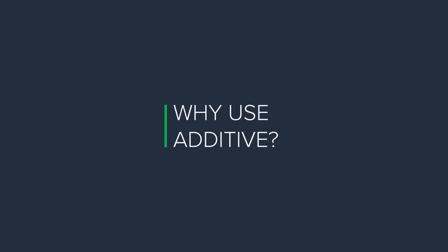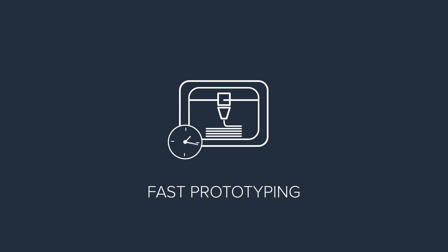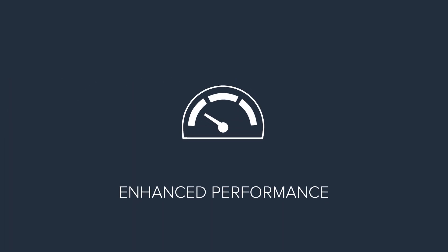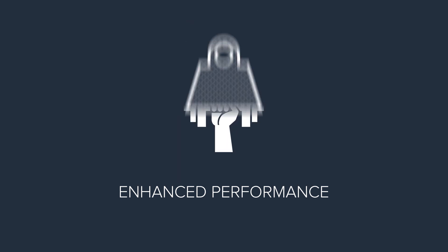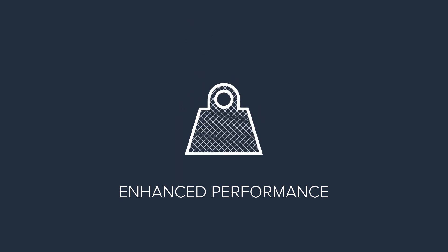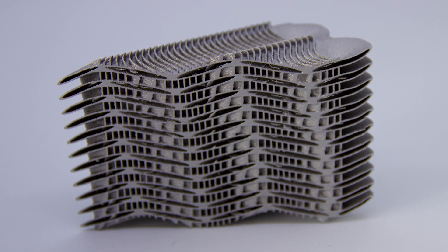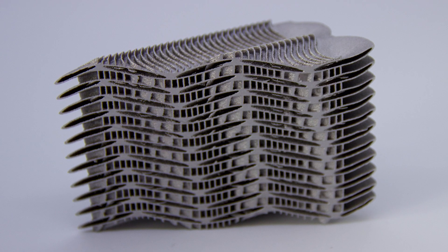More broadly, here are a few reasons why we want to use additive manufacturing. Obviously, at the start it can enable fast prototyping in your office or in your machine shop. But also it can achieve complex geometries, many of which we couldn't imagine before. We can also design parts for enhanced performance — for instance greater strength or reduced weight — or embedding thermal management features such as internal cooling channels in heat exchangers, in mold tooling, and in other devices.